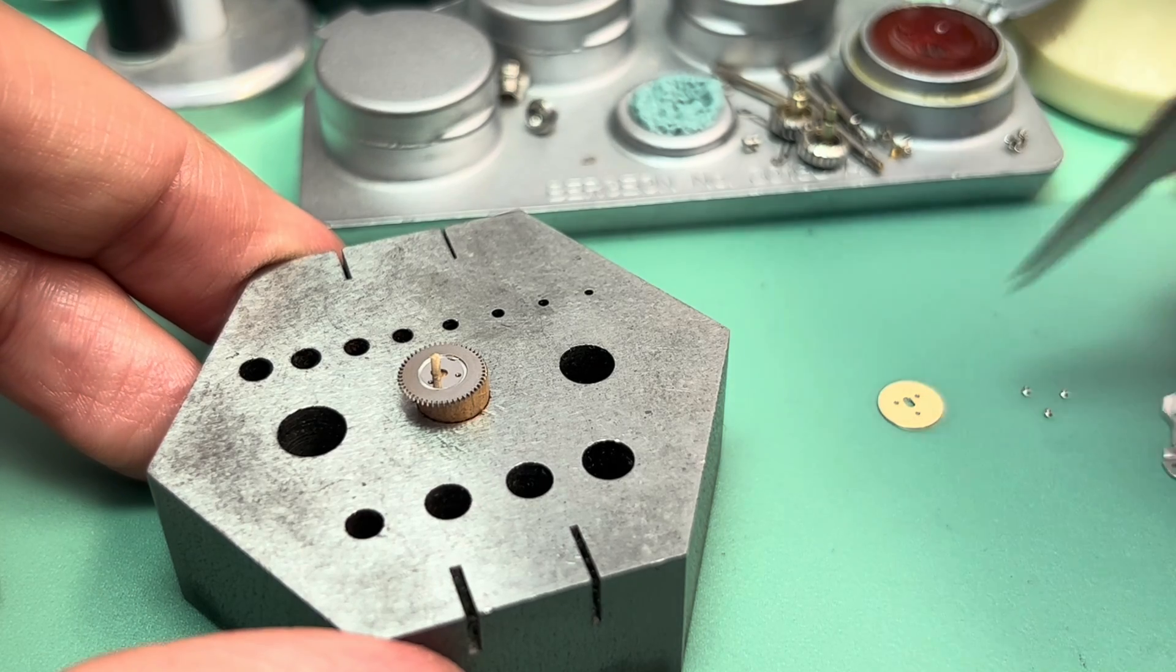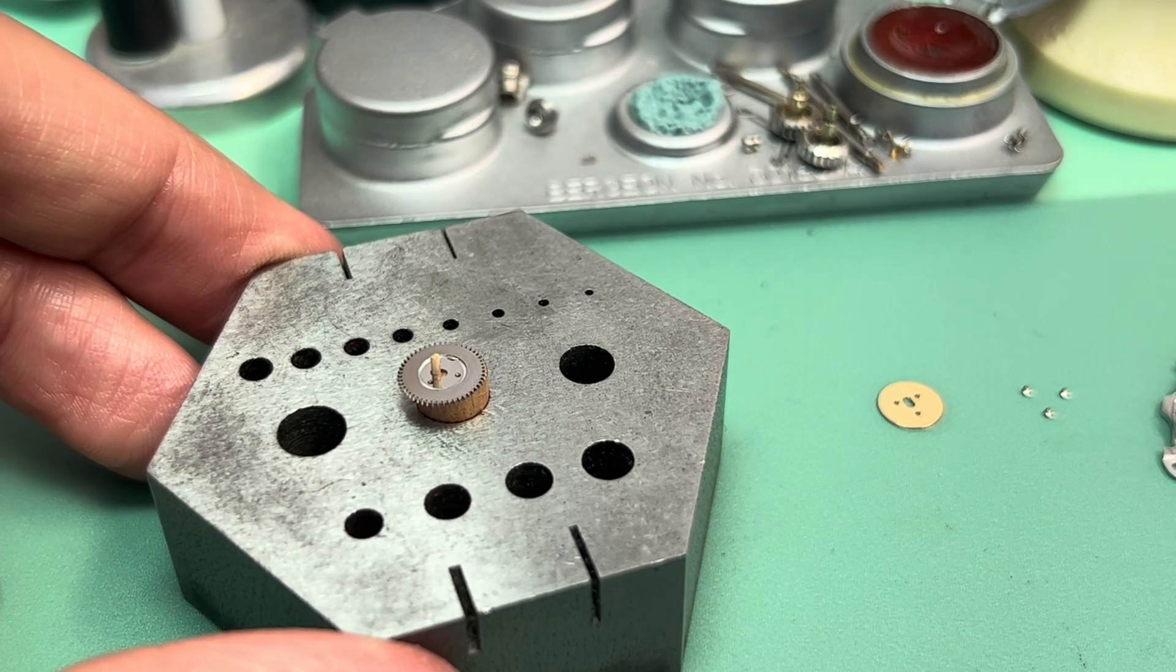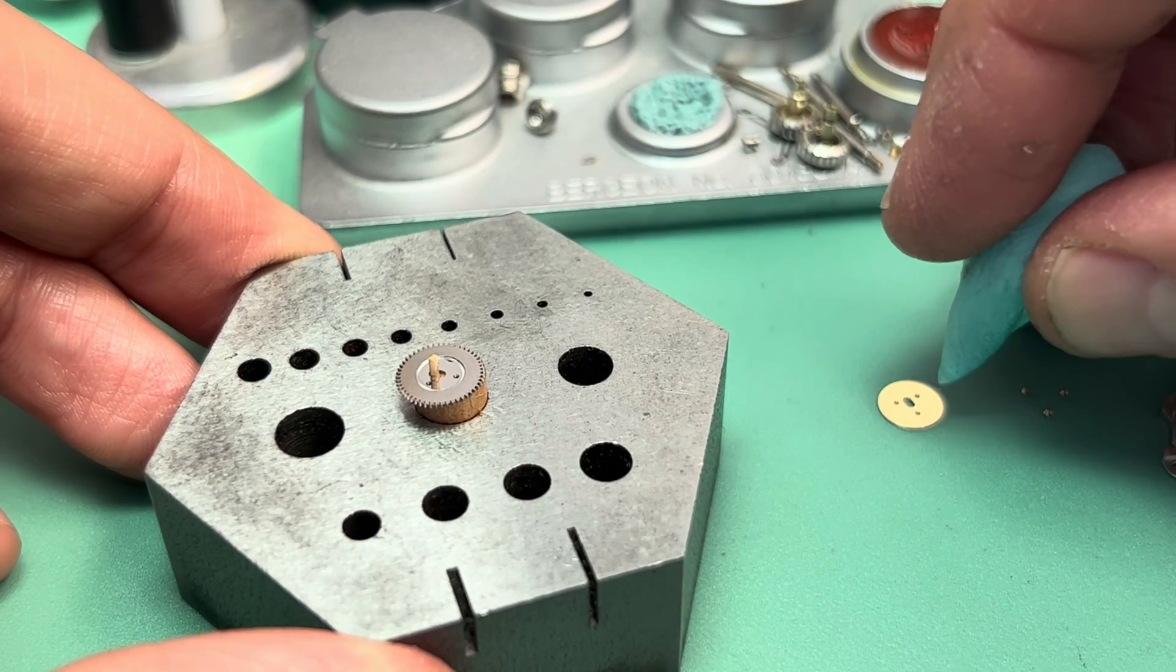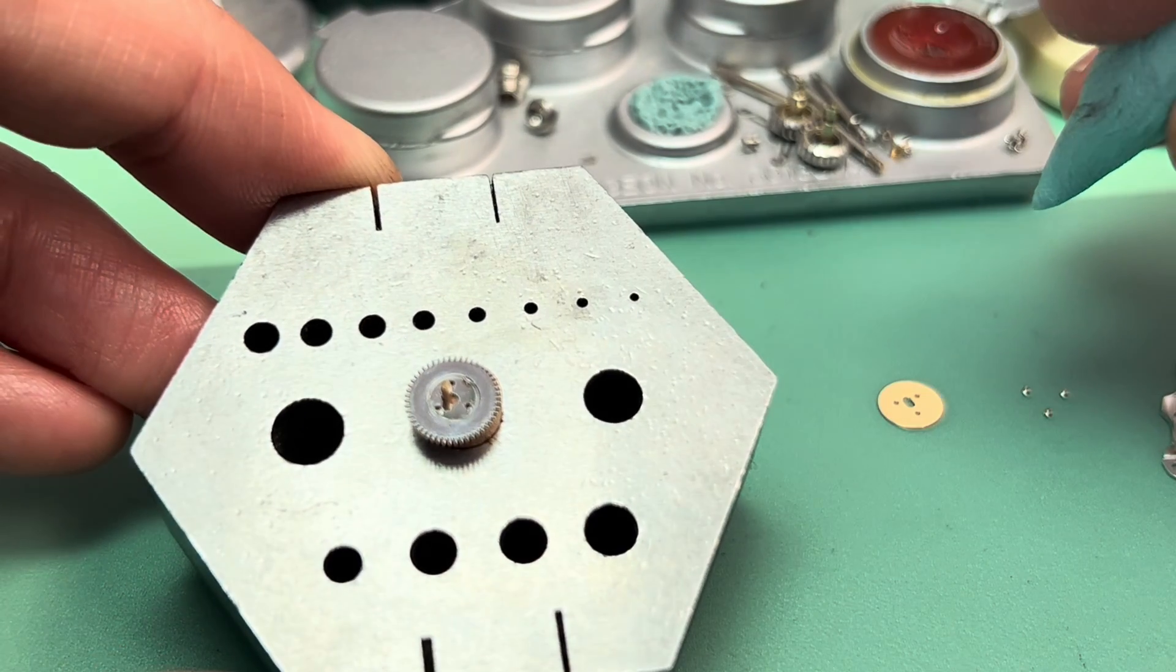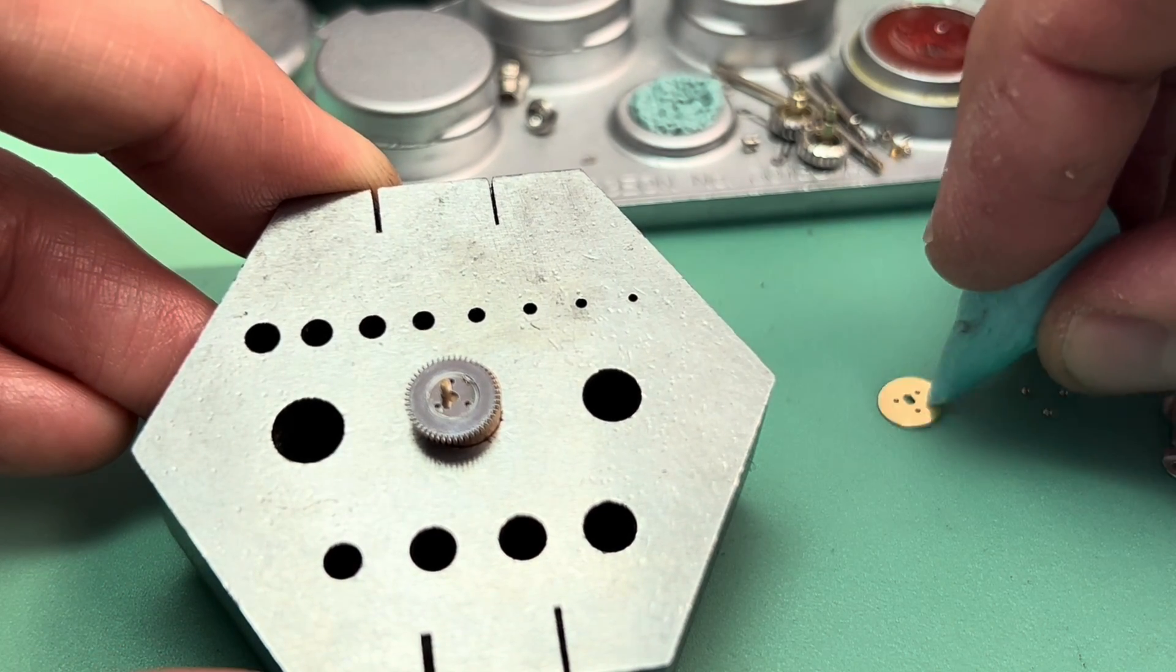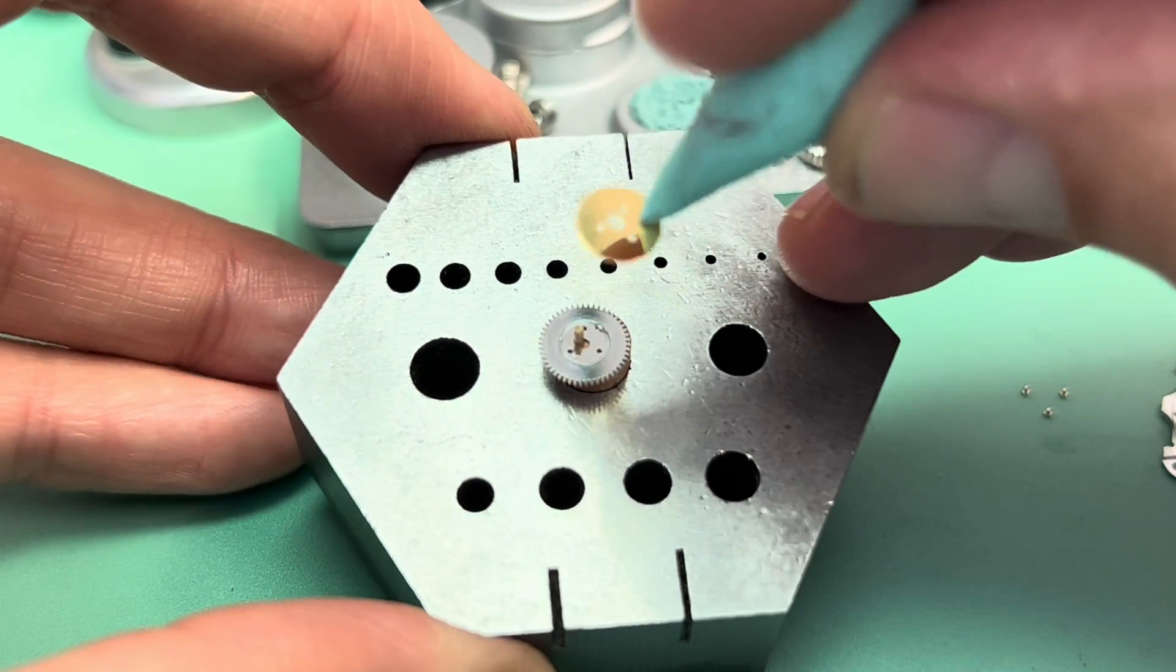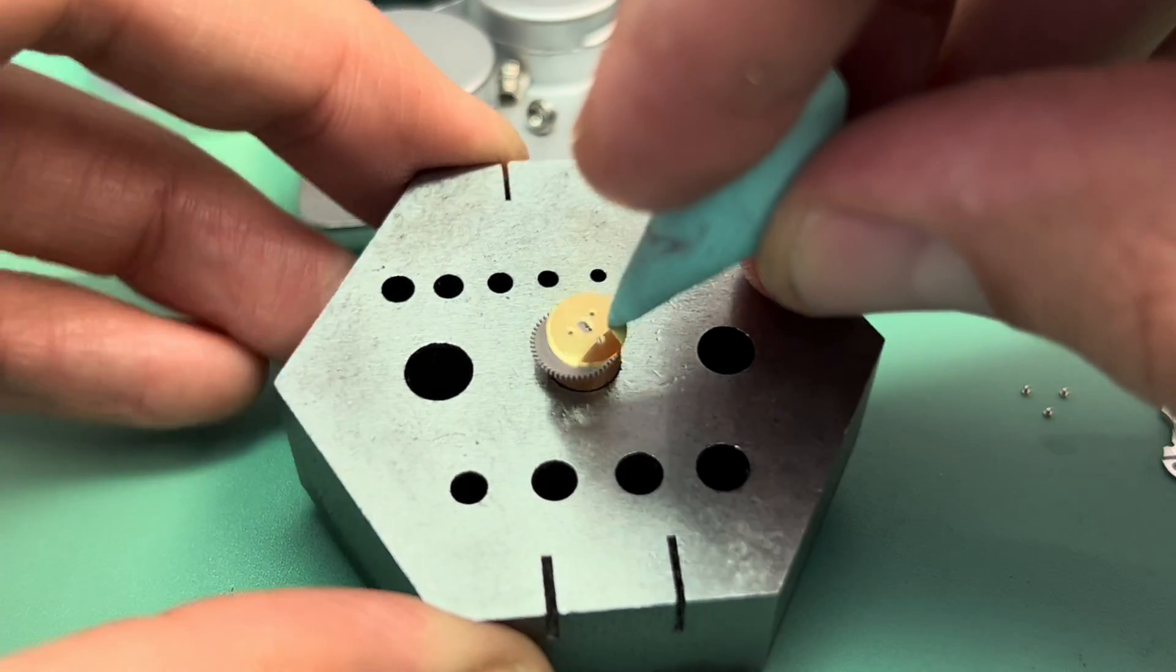Now we have this real thin brass shim. Bend that on my Rodico so I don't scratch it or bend it with my tweezers. Or touch it with my fingers.